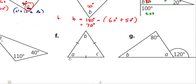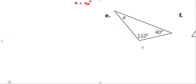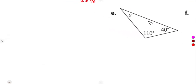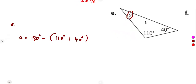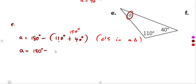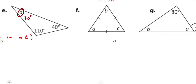On part e, it's straightforward. Angle A equals 180 degrees minus the two given angles of 110 degrees and 40 degrees — angles in a triangle. Adding 110 and 40 gives 150, so 180 minus 150 equals 30 degrees. Angle A is 30 degrees. All three angles must sum to 180 degrees.